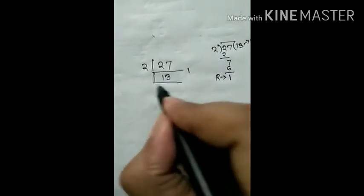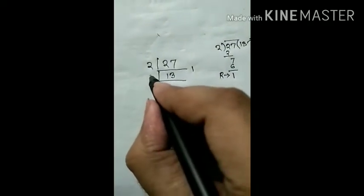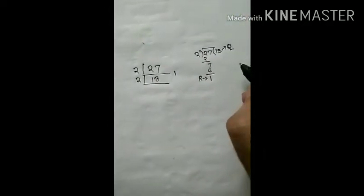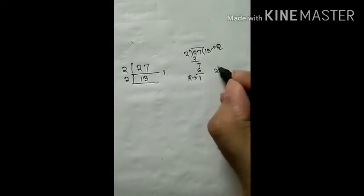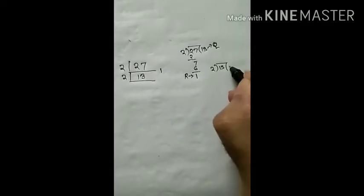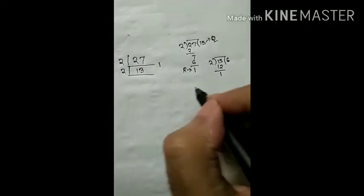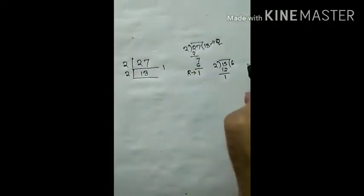Again we divide by 2. Divide 13 by 2. Here the remainder is 1 and quotient is 6.